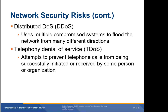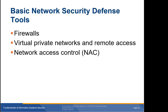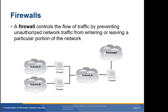Defense against these network risks begins with basic hardware and software tools like firewalls, virtual private networks, and network admission control. A firewall controls the flow of traffic by preventing unauthorized network traffic from entering or leaving a particular portion of the network. You can place a firewall between an internal network and the outside world, or within the internal network to control access to particular corporate assets. Firewalls are critical elements of network security but will not solve all your security problems.